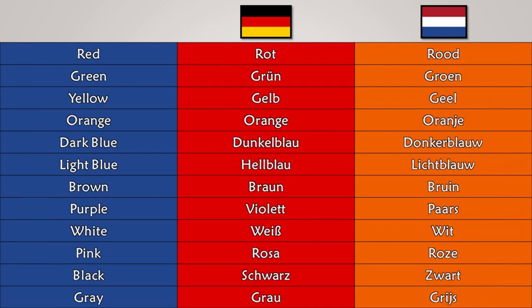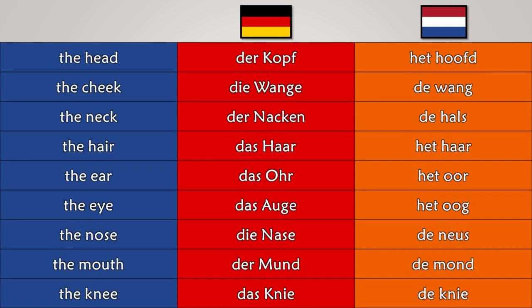Colors in German and Dutch: Rood! Rood! Grün! Groen! Gelb! Geel! Orange! Oranje! Dunkelblau! Donkerblauw! Hellblau! Lichtblauw! Braun! Bruin! Violett! Paars! Weiß! Wit! Rosa! Roze! Schwarz! Zwart! Grau! Grijs!